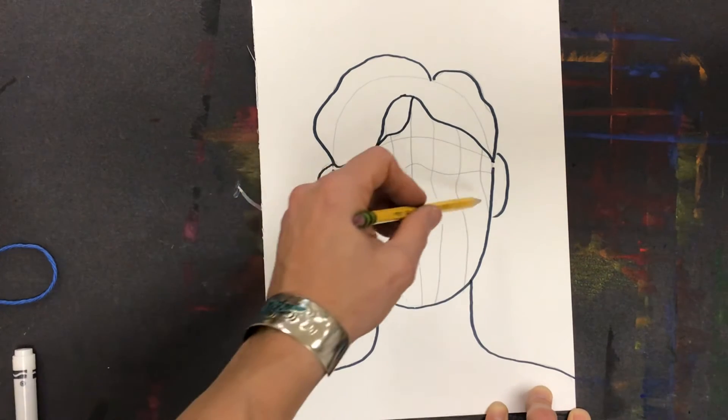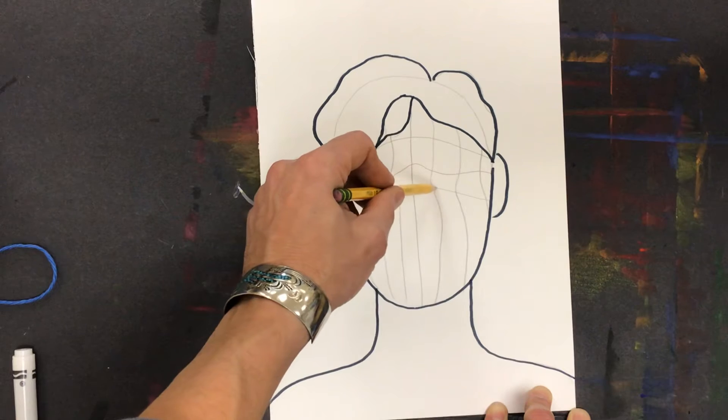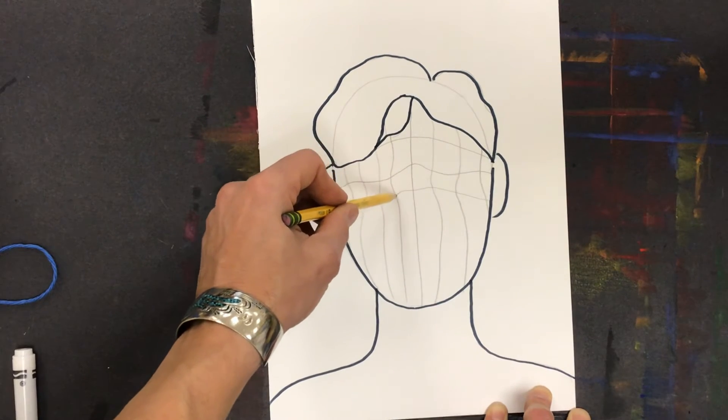This is almost like if I had a net and just lightly draped it over someone's face - it would show all these high and low parts.